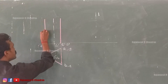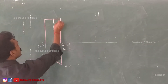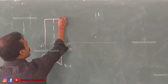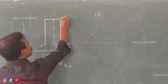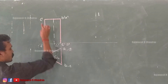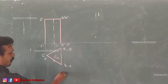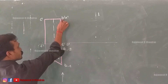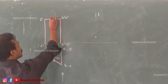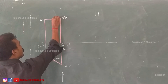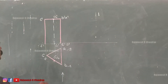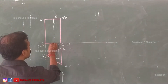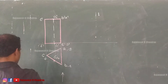Every edge will be at the same height, so we will get these points. This will be our B dash, A dash, C dash — because as we are observing from here, B will come first. So B dash, A dash, and this will be our C dash. So the front view has been completed.